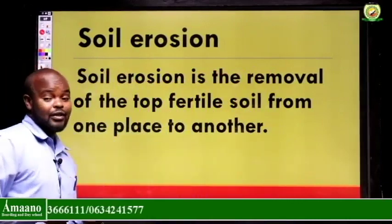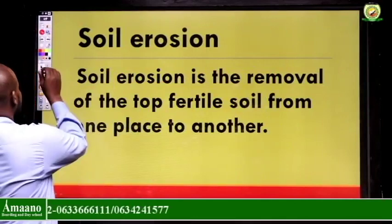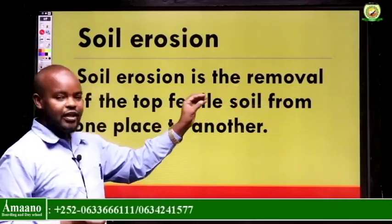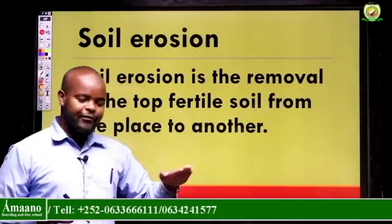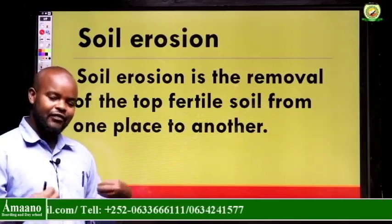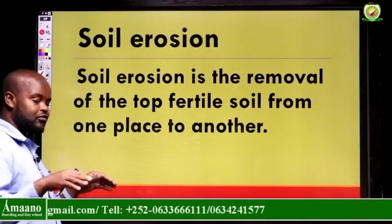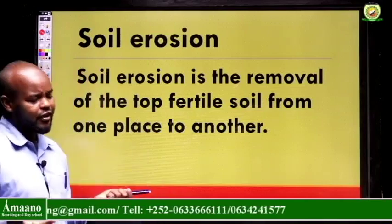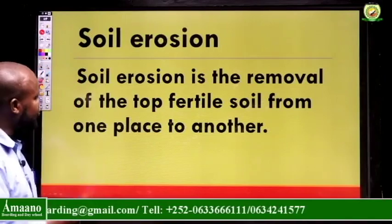We will start with soil erosion. Soil erosion is the removal of the top fertile soil from one place to another. Fertile soil means the productive part of the soil that helps plants and vegetables to grow. So the removal of that top layer of the soil from the surface by different things is called soil erosion.